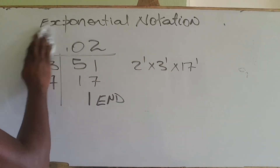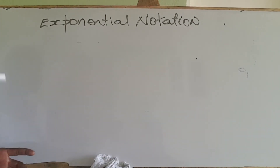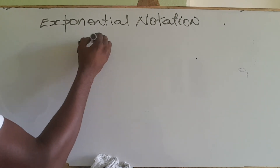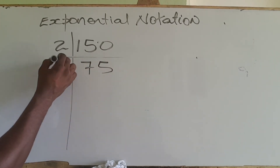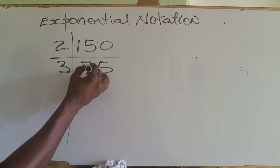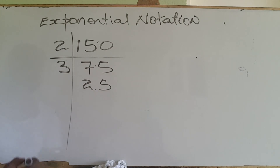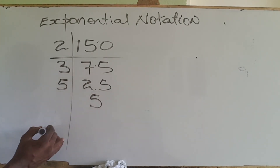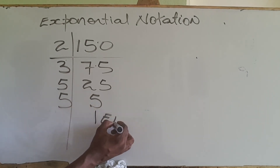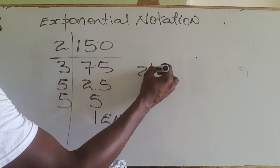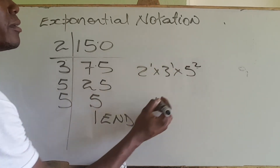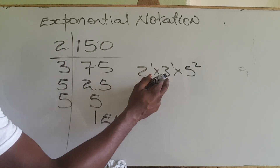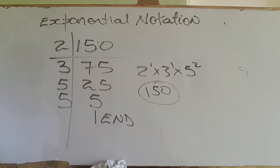Let's try one last one — 150. 2 into 150 gives 75, then 3 into 75 gives 25, then 5 into 25 gives 5, and 5 into itself is 1 — we are at the end. So 150 = 2¹ × 3¹ × 5². We can verify: 2 × 3 × 25 = 150. So there you go — writing numbers in exponential notation.